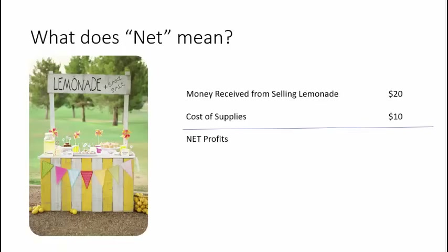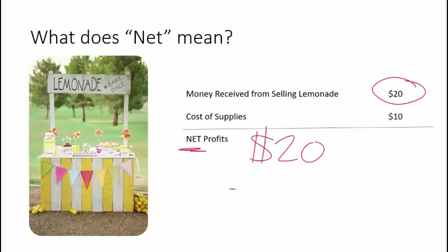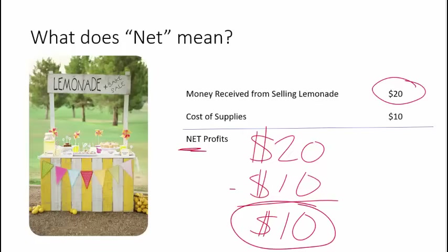Imagine you had a lemonade stand, and you sold lemonade and made $20. You took in $20 from selling that lemonade. Does that mean you made $20 worth of profit? No, because you had to buy supplies — sugar, cups, and lemons. Let's say those supplies cost you $10. So what was your net profit? Net meaning overall profit. If we subtract everything from all the pluses, you had $20 that you took in but spent $10, so your net profit when all was done was $10.